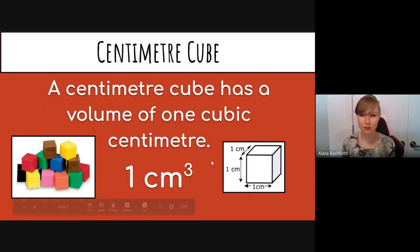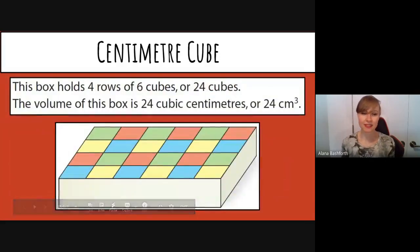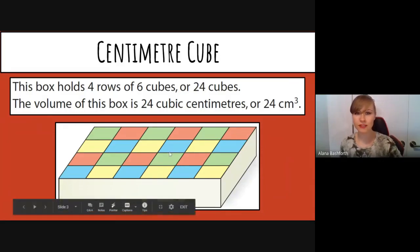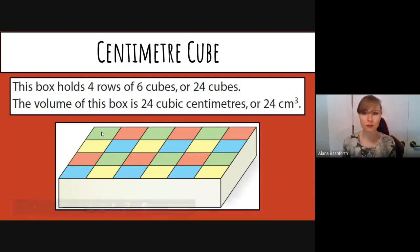That's how we say this. We don't say one centimeter three, we say one centimeter cubed. Okay, so let's look at some examples. This box holds four rows of six cubes, or 24 cubes. The volume of this box is 24 cubic centimeters, or 24 centimeters cubed.